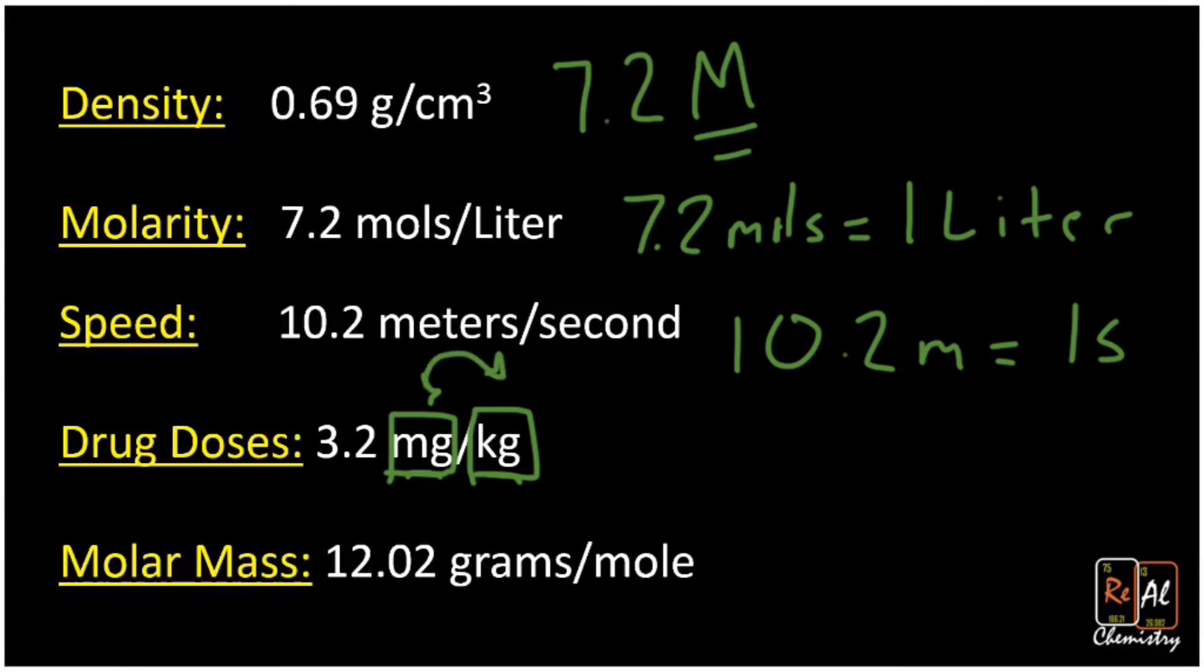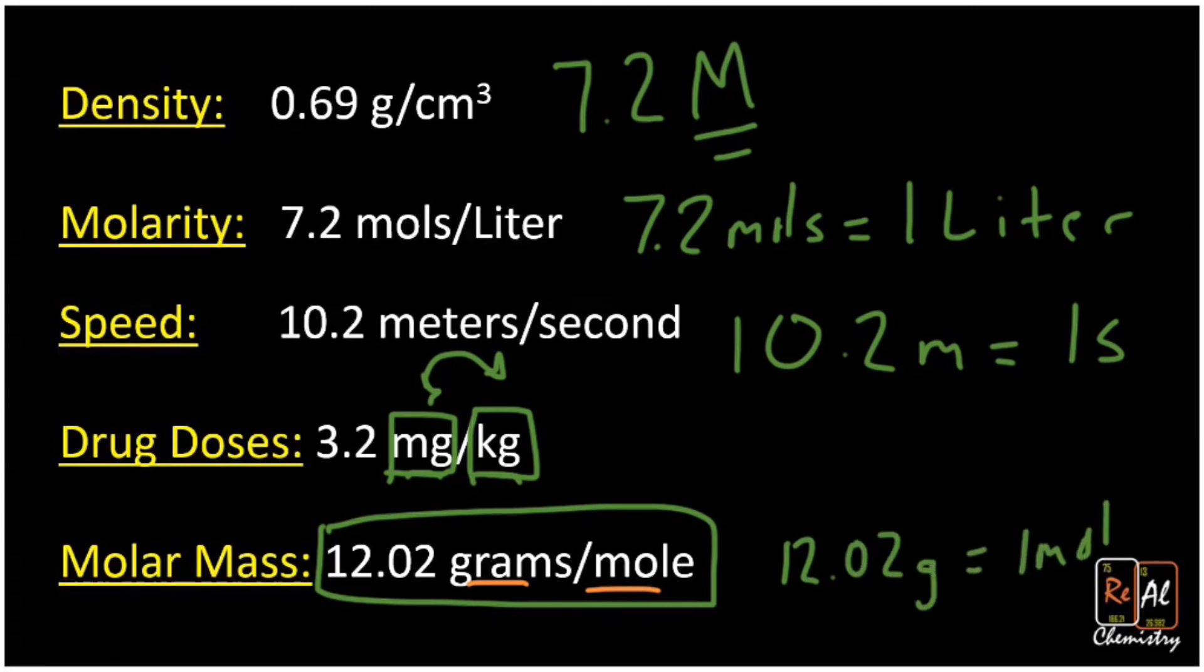Molar mass, a really common number you'll see in chemistry that's really important for conversions. 12.02 grams per mole. What does that go between? Grams and moles. So whenever you can start looking at numbers like this and realize that secretly those are conversion factors that go between those two units, you can save yourself a lot of time. So this would be 12.02 grams equals one mole. And now I can use that equality as a conversion factor.